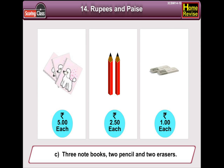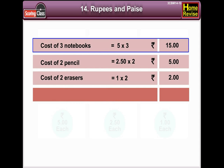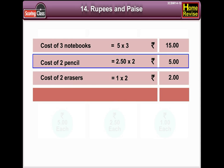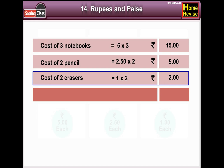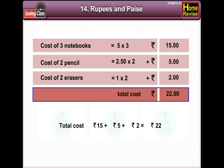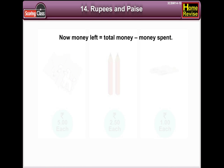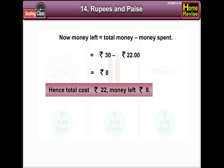Part C: 3 notebooks, 2 pencils, and 2 erasers. Cost of 3 notebooks is rupees 5 multiplied by 3, that is rupees 15. Cost of 2 pencils is rupees 2 and 50 paisa multiplied by 2, that is rupees 5. Cost of 2 erasers is rupee 1 multiplied by 2, that is rupees 2. The total cost is rupees 15 plus rupees 5 plus rupees 2, which is rupees 22. Money left is rupees 30 minus rupees 22, which is rupees 8. Hence, total cost is rupees 22 and money left is rupees 8.